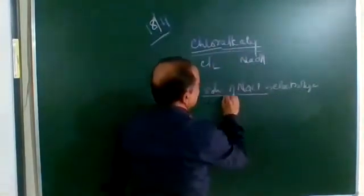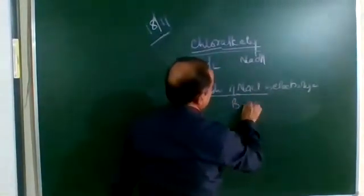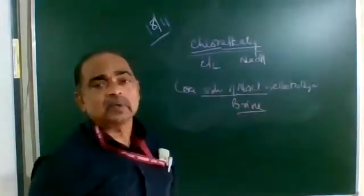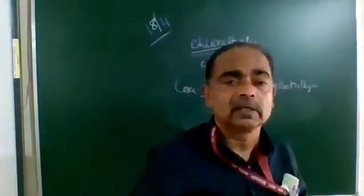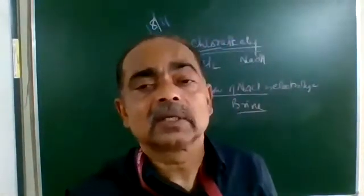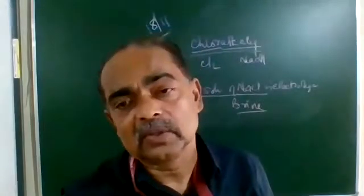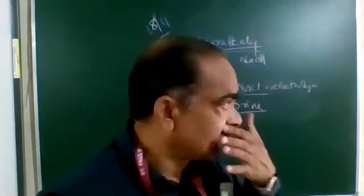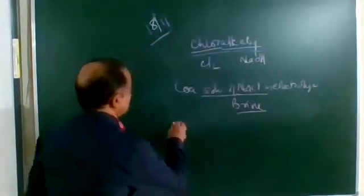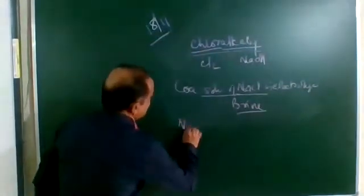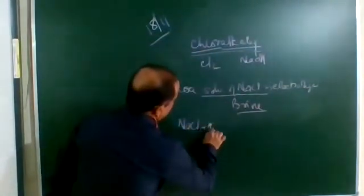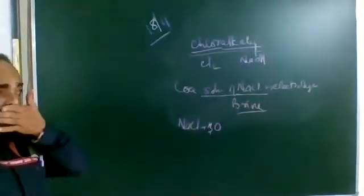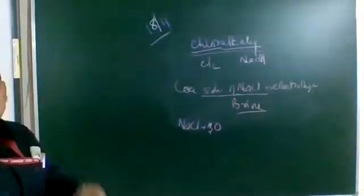The concentrated solution of NaCl is known as brine. You know that some food items are preserved in brine. So brine is a concentrated sodium chloride solution. This solution of common salt is a good electrolyte.